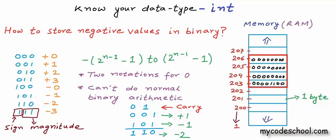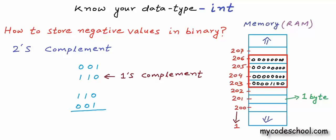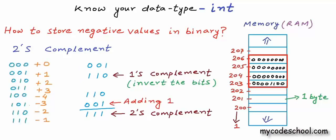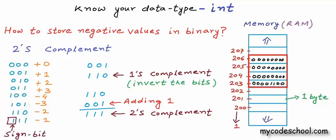When we invert all the bits in a binary number, it's called the 1's complement of that number. Adding 1 to the 1's complement gives us the 2's complement. In the 2's complement system, the negative of a binary number is stored as its 2's complement. In 3 bits using 2's complement, the most significant bit of all negative numbers is 1 and the most significant bit of all positive numbers is 0, so it still works as a sign bit. Importantly, there is only one notation for 0, and we can apply normal binary arithmetic rules.